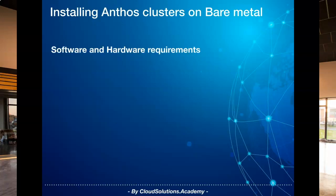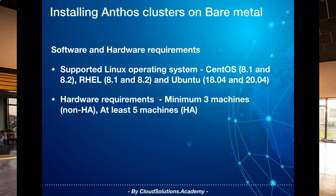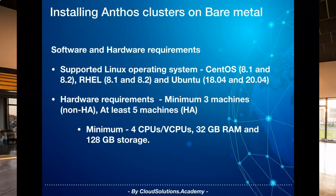Anthos clusters on bare metal require minimum hardware to run on a supported Linux operating system. The Linux operating systems currently supported are CentOS, Red Hat Enterprise Linux and Ubuntu, and only specific versions are supported. With respect to hardware requirements, we require a minimum of three machines to install Anthos clusters on bare metal servers, but in the real world you would need at least five machines for high availability and resiliency. The minimum hardware configurations required are four CPUs, 32 GB RAM and 128 GB of boot storage.